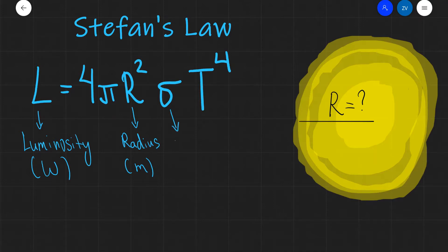Sigma is a constant, which is 5.67 × 10⁻⁸. And the temperature is the, well, T is the surface temperature of the star, which is, of course, measured in Kelvin.